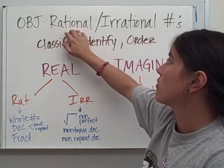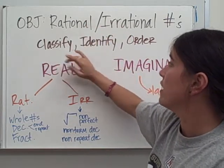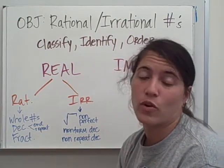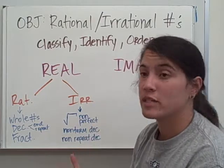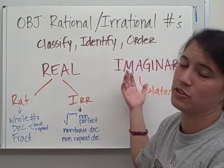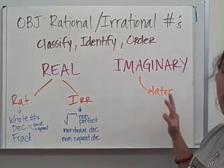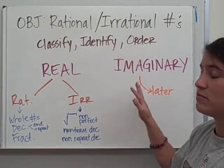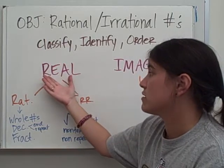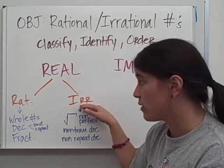Today's objective: we're going to deal with rational and irrational numbers. The whole point is we're going to classify, identify, and order rational and irrational numbers. In our world we have real numbers and we have imaginary. You won't deal with imaginary until later in high school math, so don't worry about it — just know it exists. We deal with the real number system, and within it there are two categories: rational and irrational.